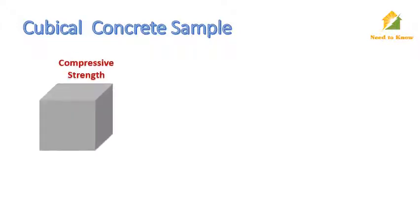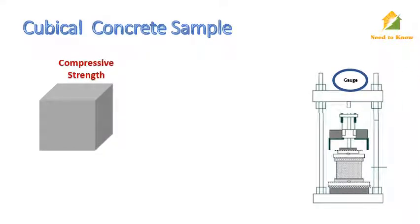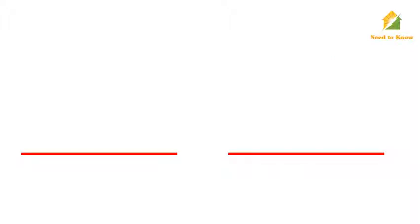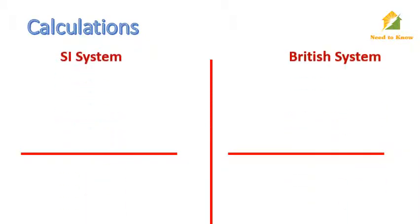Secondly, we discuss and calculate compressive strength for cubical sample. Place the concrete cube at the center of the compressive machine platform while loading. Ensure uniform load transferring in the sample. Note the load at the break point in kilonewton or pound. Here we discuss compressive strength calculations for cubical samples in both SI and British systems.